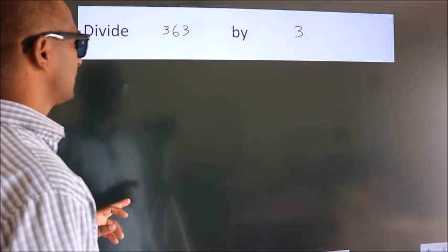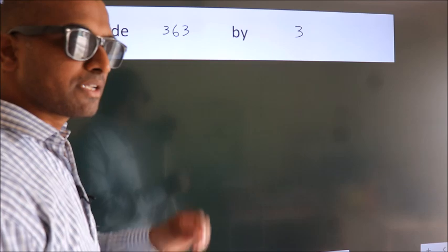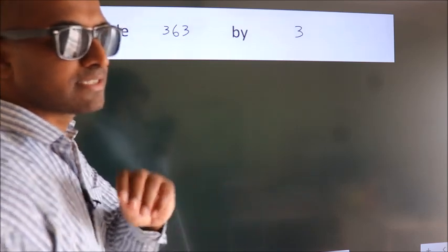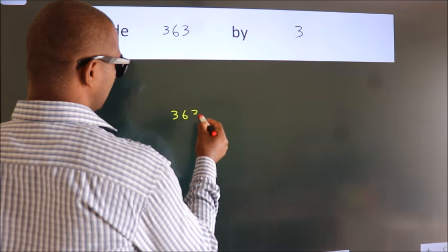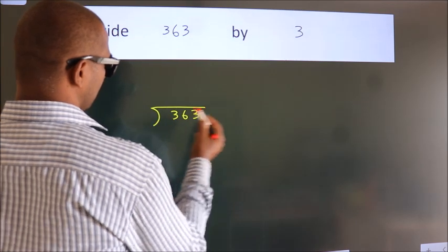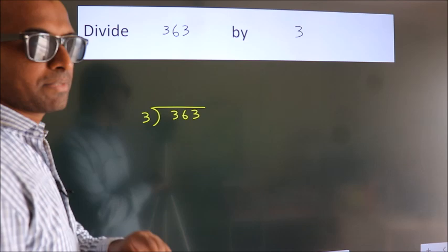Divide 363 by 3. To do this division, we should frame it in this way. 363 here, 3 here. This is your step 1.